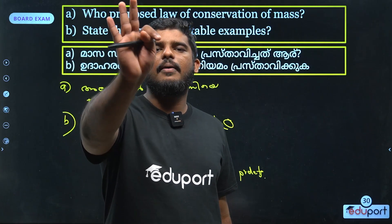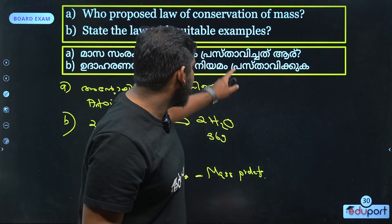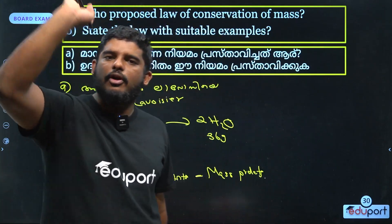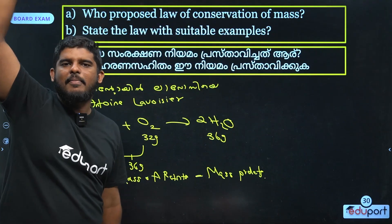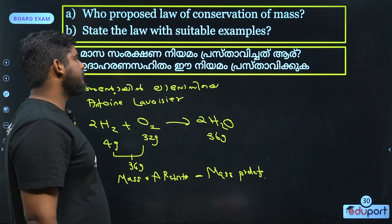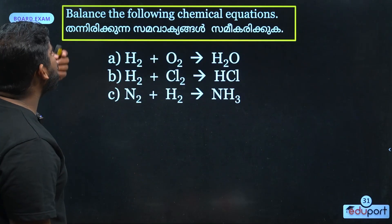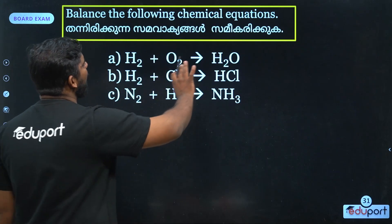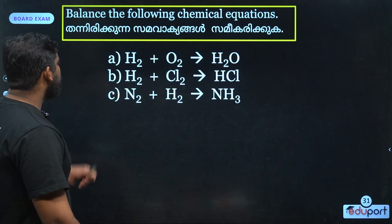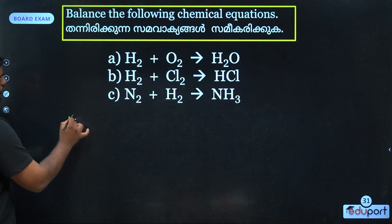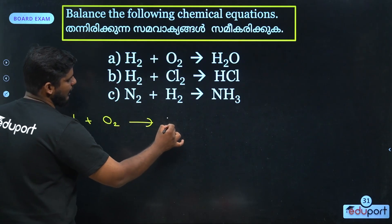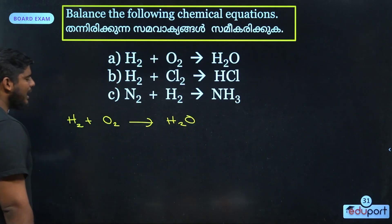This is not a 3-mark answer. If you don't have a 3-mark, you can take a 3-mark. Ready? The next thing: balance the following chemical equation. H2 plus O2 gives H2O.